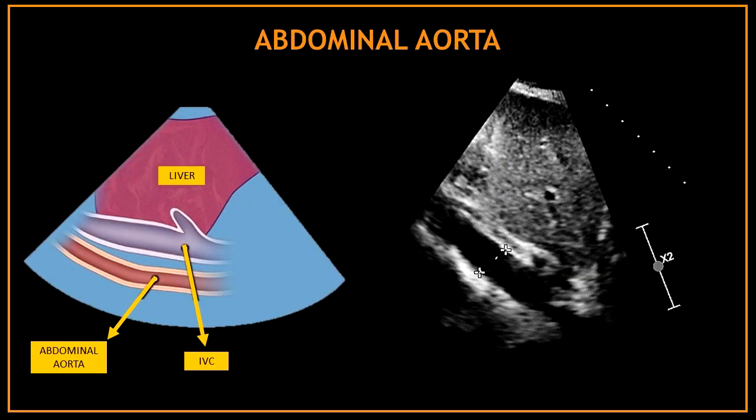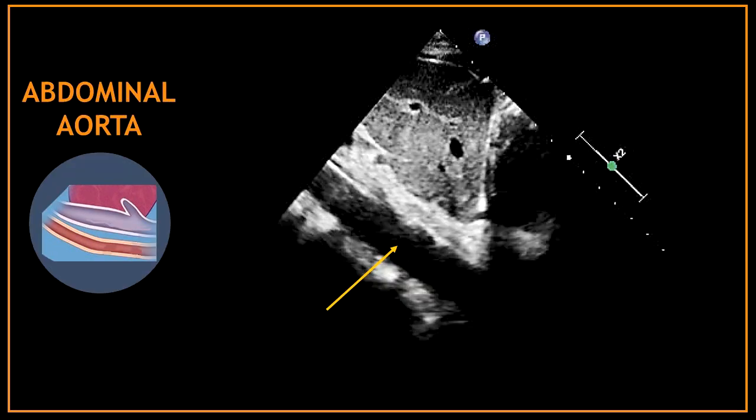One last structure you can often see in the subcostal view is the abdominal aorta. It looks very similar to the inferior vena cava, which is why it's very important to get confident in differentiating both.